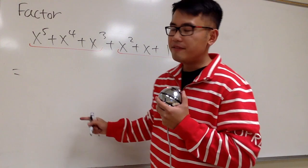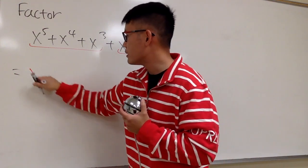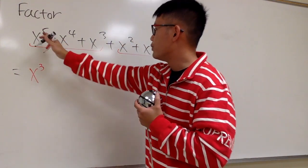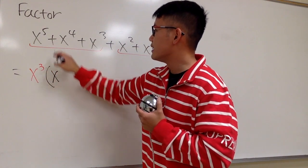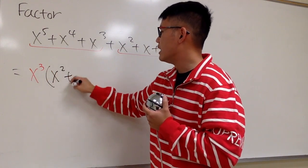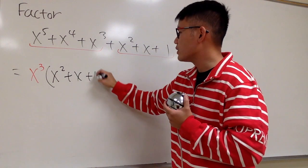From the first three, I can factor out x to the third power. And right here inside, you are going to end out with x squared plus x to the first plus one.